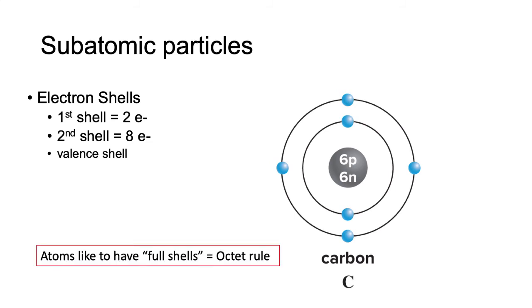The octet rule states that the valence shell likes to be full. Let's take a look at what this looks like. Helium is atomic number 2, which means that it has 2 protons. We now know that if helium is neutral, there will also have to be 2 electrons.